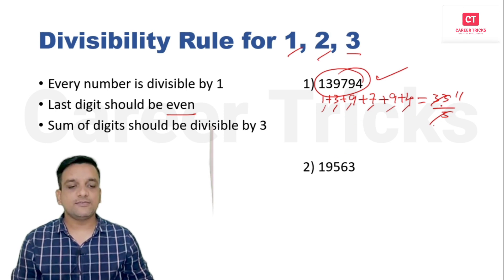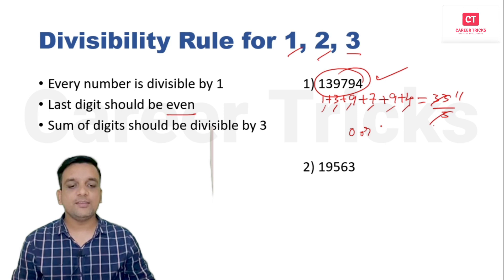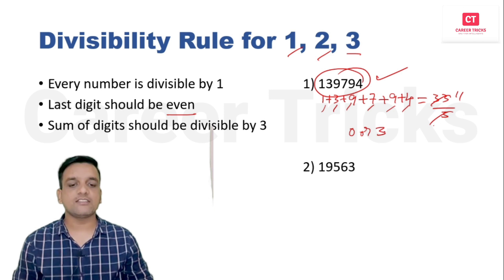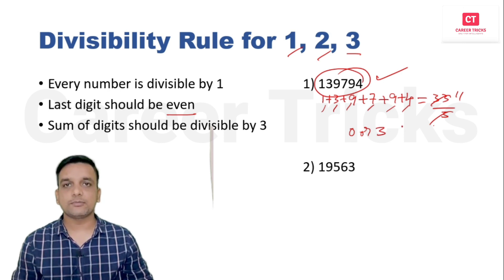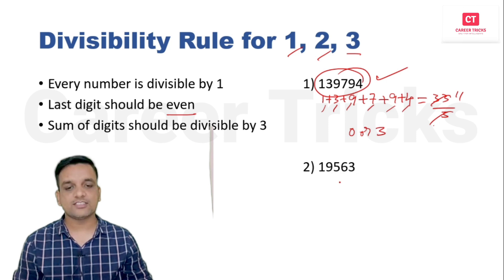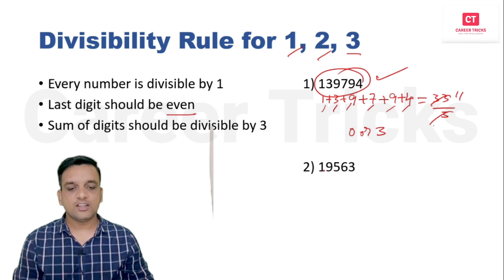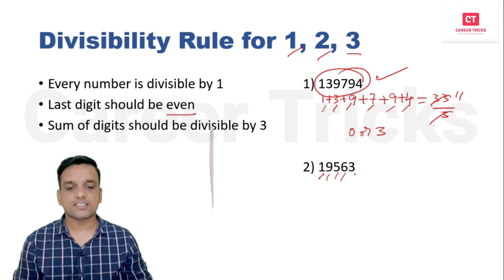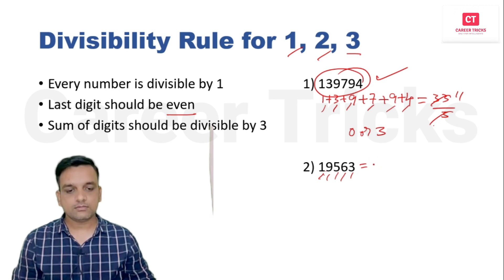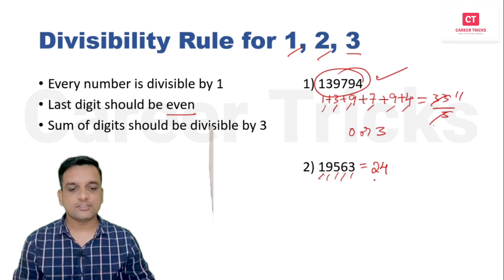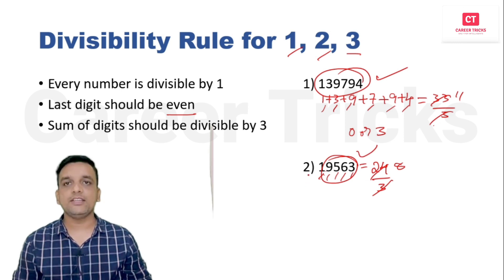If the sum of digits is 0 or any multiple of 3, the number is divisible by 3; otherwise it is not. For a second example: 1 + 9 + 5 + 6 + 3 = 24. Is 24 divisible by 3? Yes. So that number is also divisible by 3. This is the divisibility rule for 1, 2, and 3.